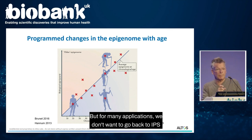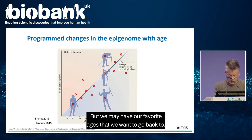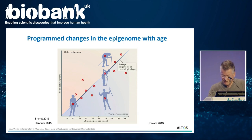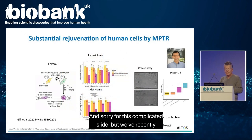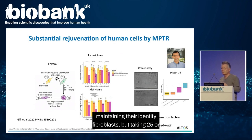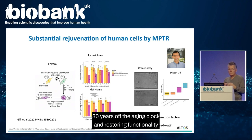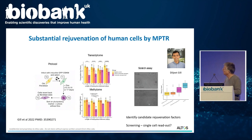For many applications we don't want to go all the way back to iPS and age zero — we may have our favorite ages we'd like to return to. We've recently developed a method where we can rejuvenate human cells while maintaining their identity as fibroblasts, taking 25 or 30 years off the aging clock and restoring functionality associated with young cells.